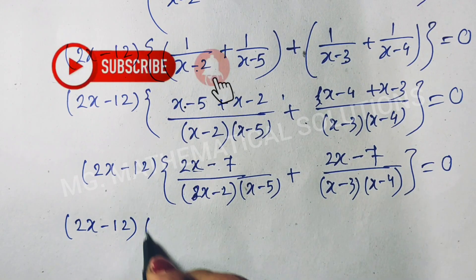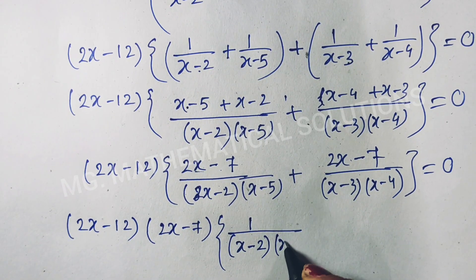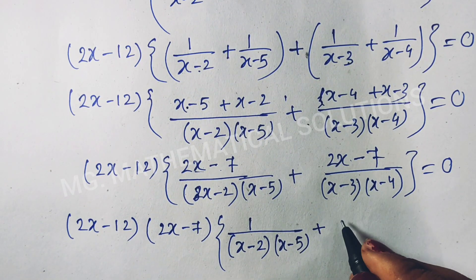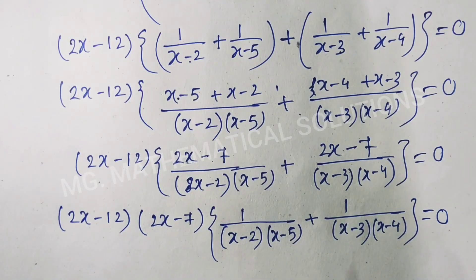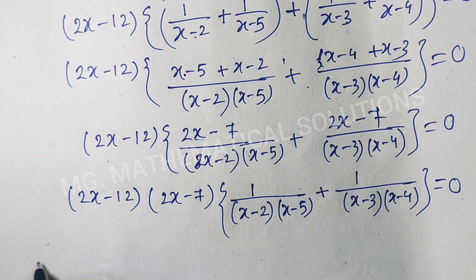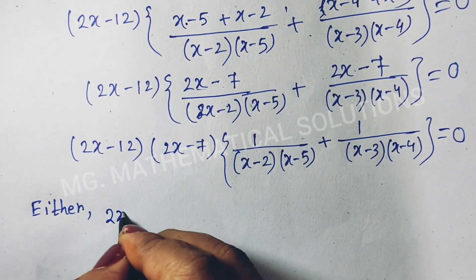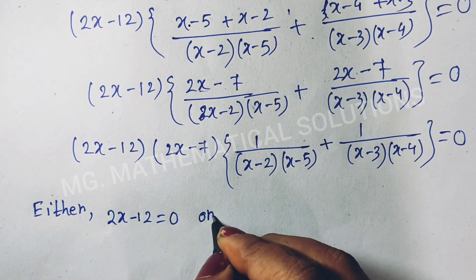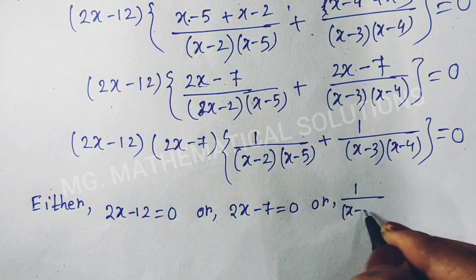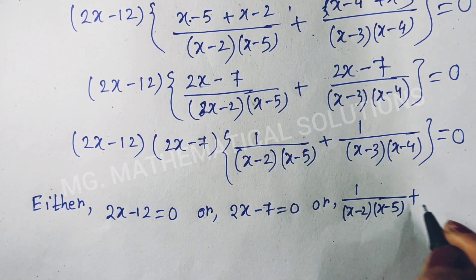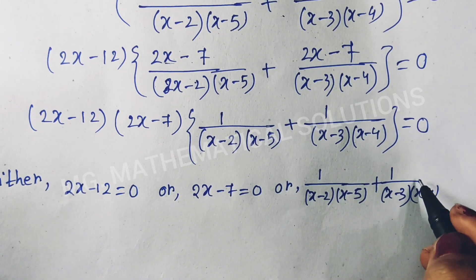Now we take out common factor (2x-7). So (2x-7) times [1/((x-2)(x-5)) plus 1/((x-3)(x-4))] equal to 0. Now we can say that either 2x-7 equal to 0, or 1/((x-2)(x-5)) plus 1/((x-3)(x-4)) equal to 0.